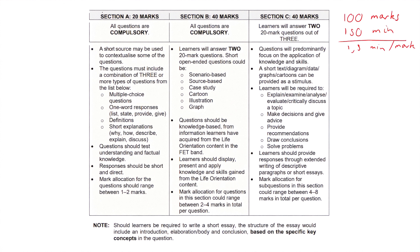So in section A, all questions are compulsory. So a short source may be used to contextualize some of the questions. But before that happens, you're going to have some MCQs, some nice multiple choice questions. You're going to have five. They're each worth one mark. Use process of elimination. If you don't know what the answer is, find one that is the most correct and eliminate the ones that are definitely incorrect.